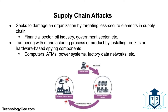Let's talk about supply chain attacks. A supply chain attack is a cyber attack that seeks to damage an organization by targeting less secure elements in the supply chain. It can occur in any industry — from the financial sector and oil industry to the government sector. Cyber criminals typically tamper with the manufacturing process of a product by installing a rootkit or hardware-based spying components. In reference to cybersecurity, a supply chain attack involves physically tampering with electronics such as computers, ATMs, power systems, and factory data networks in order to install undetectable malware.